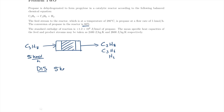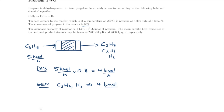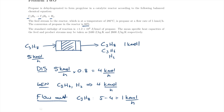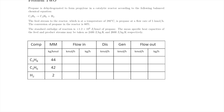The flow in is just propane at 5 kmol per hour. The disappearance term is that flow rate multiplied by the 80% conversion, so it's 4 kmol per hour. Generation is straightforward because all ratios in the balanced chemical equation are 1 to 1 to 1, so we produce propene and hydrogen at 4 kmol per hour each. The flow out for propane is flow in minus disappearance: 1 kmol per hour. Propene and hydrogen flow out at 4 kmol per hour.